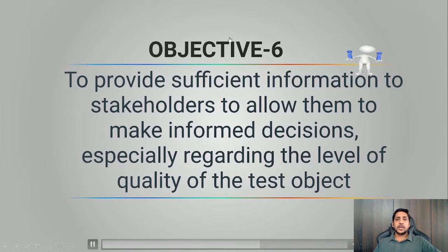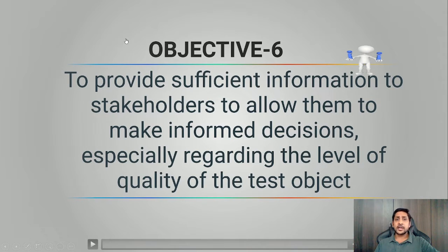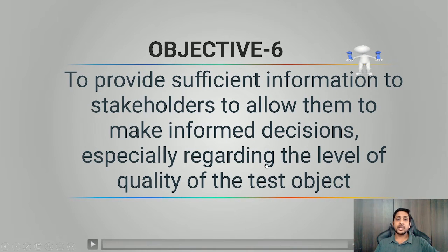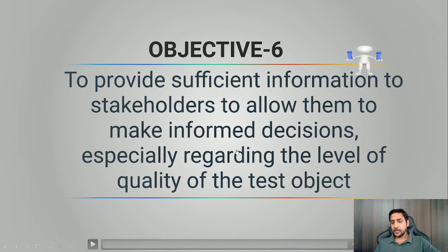The sixth objective is to provide sufficient information to the stakeholders to allow them to make informed decisions. If there are bugs in the software, we have to inform the stakeholders on time so they can take decisions regarding the level of quality and the risks associated with the test object.